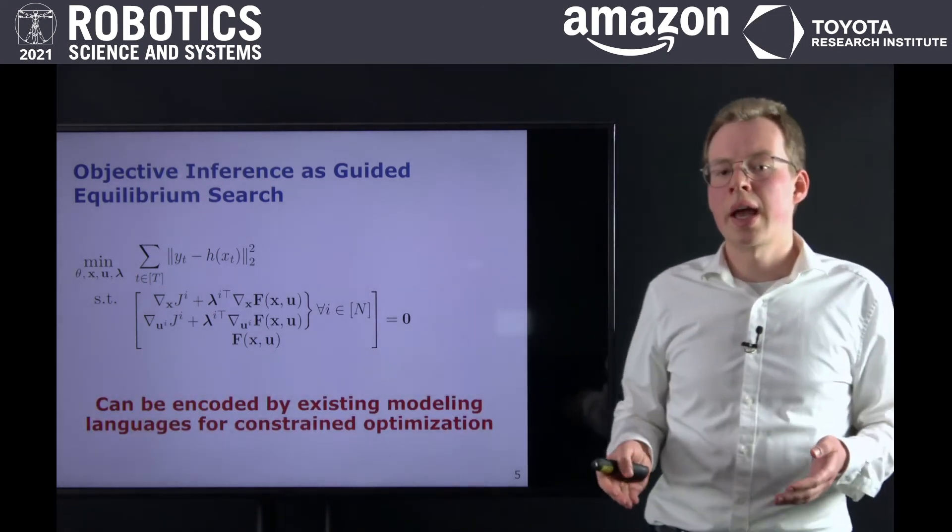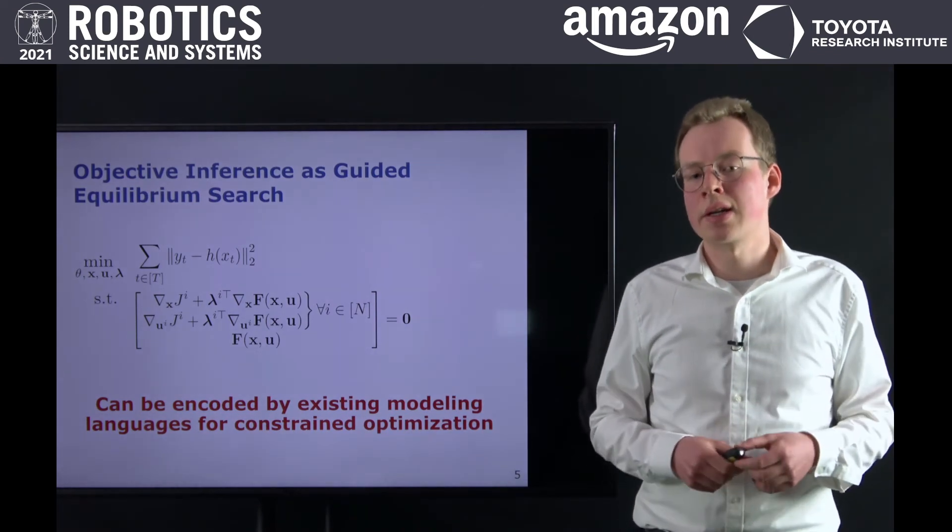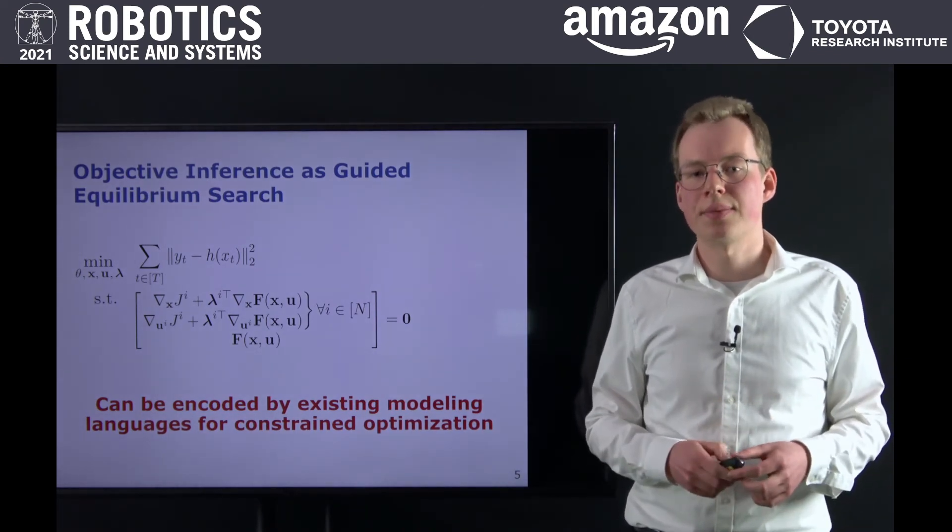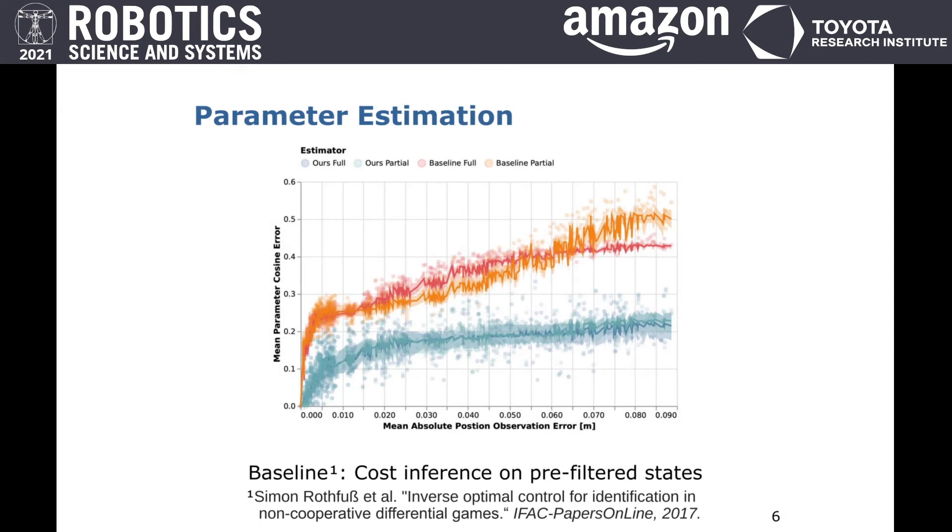Note that this formulation can be directly encoded by existing modeling languages for constraint optimization. We evaluate our method in a Monte Carlo study in which we measure the estimation performance for varying levels of observation noise. In this experiment, we compare against a baseline that estimates states and objectives sequentially instead of jointly.